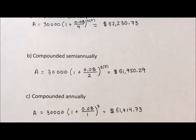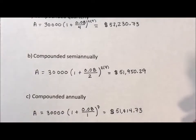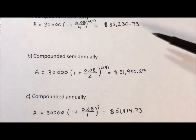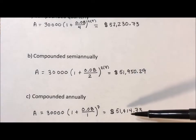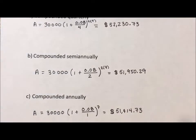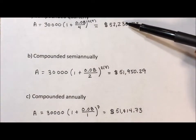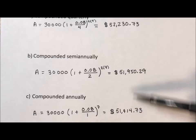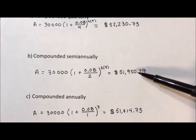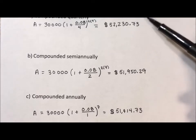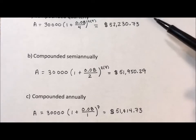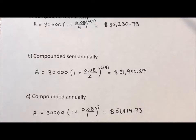So these are all my compounded interest examples, showing that as you compound less and less often, you make less and less money. The difference between quarterly and semi-annually is just over $500, and between semi-annually and annually it's just under $300. As you compound more often it helps more and more, but really you just want some sort of compounding.